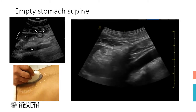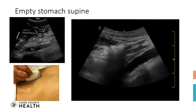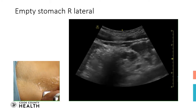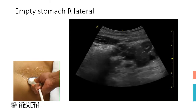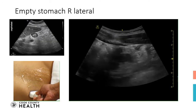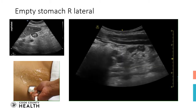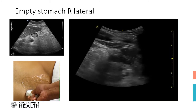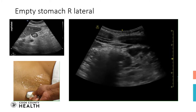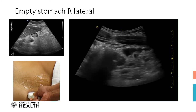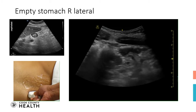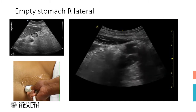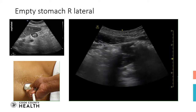We can confirm this by asking the patient to turn into the right lateral decubitus position. Now the patient is in the right lateral decubitus position and I am trying to see the antrum. The antrum will be posterior to the liver. There you can see the rounded structure next to the liver, which is the antrum. I can again confirm the bulls-eye target sign, confirming that this patient has an empty stomach.